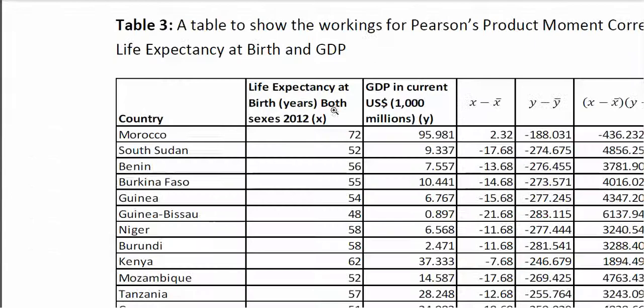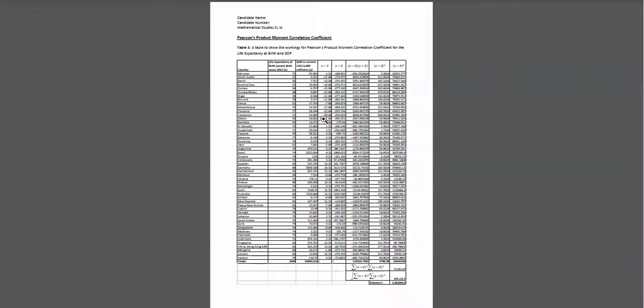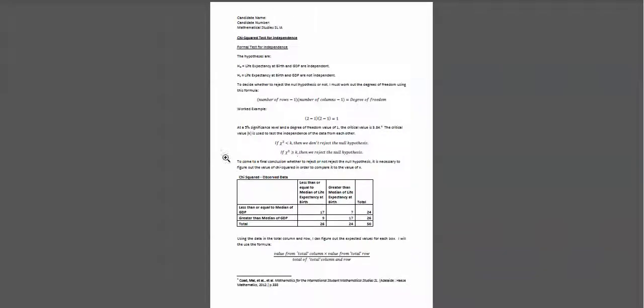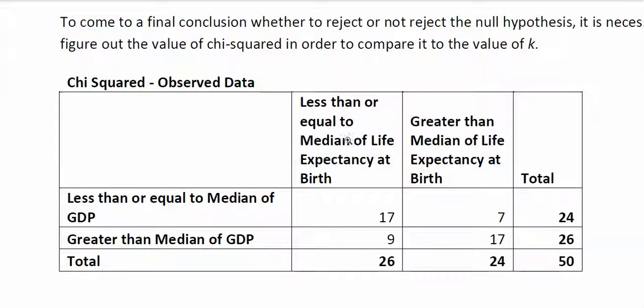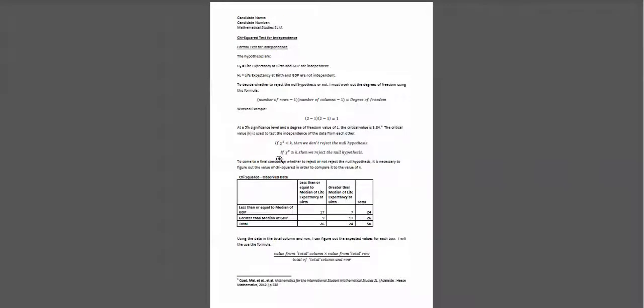So for example, Morocco's the first country. Anyway, life expectancy is 72, the GDP is 95, so let's go to the one here. So life expectancy is 72, what's the median, have they stated the median somewhere? I assume they would have done.